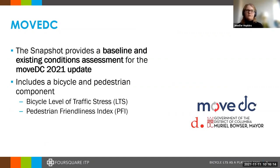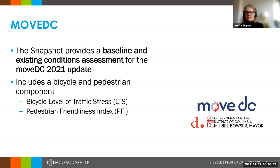To begin, for those that are not familiar, MOVE DC is DDOT's Long Range Transportation Plan. This past year, we did an update to the plan — the snapshot — where we're looking at the baseline and existing conditions for the city. This plan includes components for bicycle and pedestrian safety and infrastructure, which covered a bicycle level of traffic stress analysis as well as a pedestrian friendliness index. Today I'm going to be talking about the bicycle level of traffic stress portion of this.